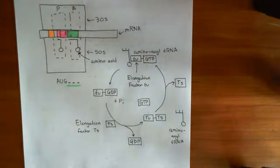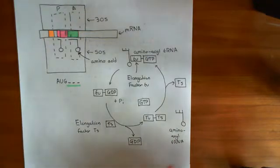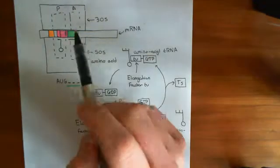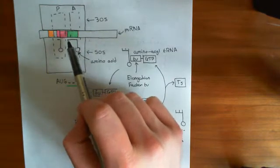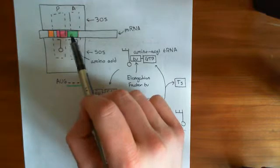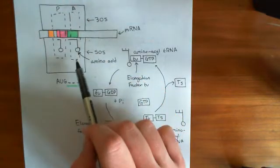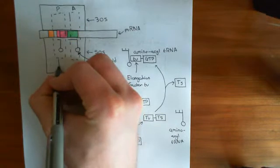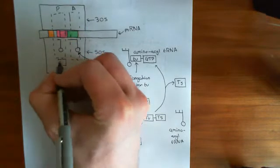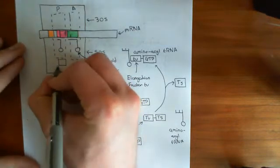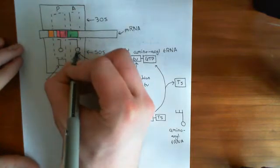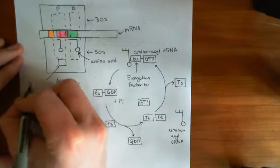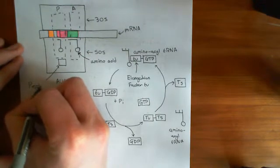Welcome back to this next video on the tetracycline antibiotics. So far what we've seen is how you can add in your next aminoacyl tRNA into the A site of the ribosome. What will now happen is that the enzyme peptidyl transferase will transfer the amino acid in this P site onto the amino acid in the A site. This is the enzyme peptidyl transferase.